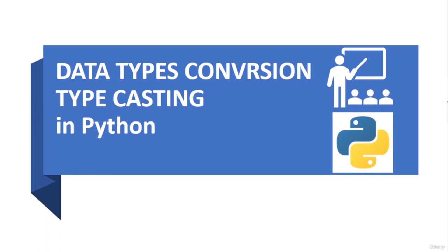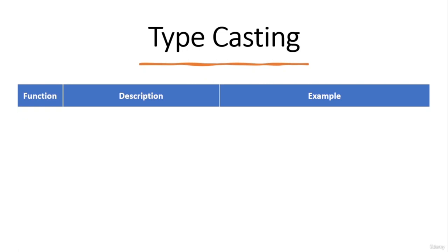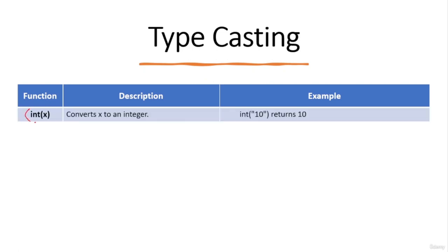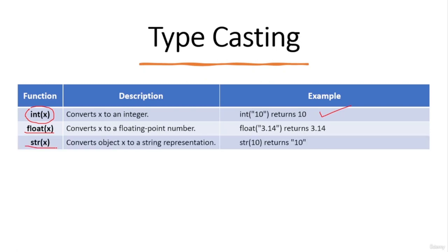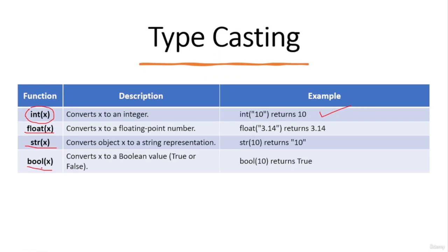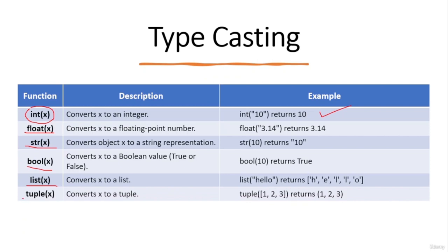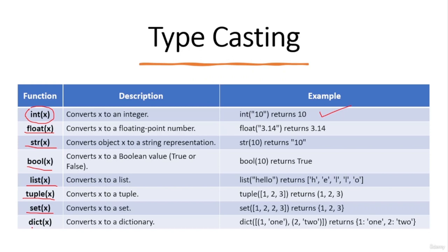Now let's cover data type conversion or type casting in Python. Python has built-in functions for type casting: 'int(x)' converts x to an integer; 'float(x)' converts x to a floating-point number; 'str(x)' converts x to a string; 'bool(x)' converts x to a boolean; 'list(x)' converts x to a list; 'tuple(x)' converts x to a tuple; 'set(x)' converts x to a set; 'dict(x)' converts x to a dictionary. Not all conversions are possible — attempting to convert the string 'hello' to an integer will raise a ValueError.